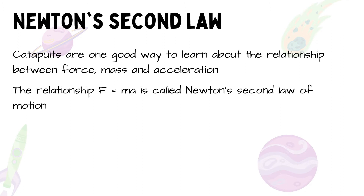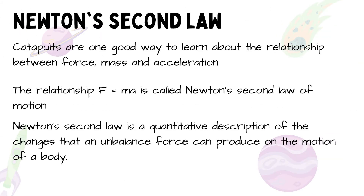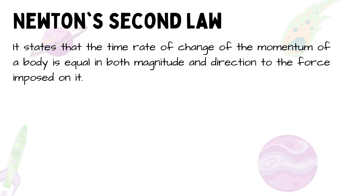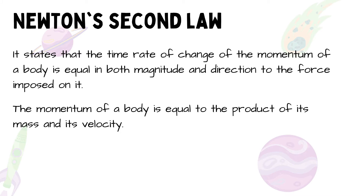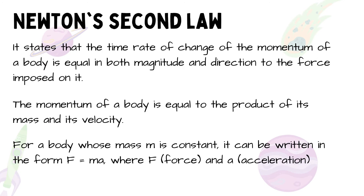The relationship of force equals mass multiplied by acceleration is called Newton's second law of motion, as it is the mathematical description of the relationship among force, mass, and acceleration. Newton's second law is a quantitative description of the change that an unbalanced force can produce on the motion of a body. The momentum of a body equals the product of mass and its velocity. For a body whose mass m is constant, it can be written as F = m × a, where F is force and a is acceleration.